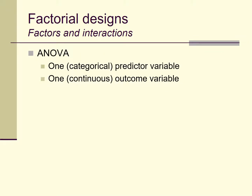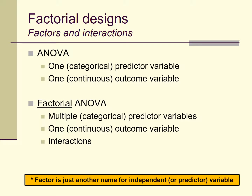What are factorial designs? You've already covered ANOVA — it's a data analysis where we have one categorical predictor variable and one continuous outcome variable. Factorial ANOVAs are just ANOVAs where there are more than one categorical predictor variable, with still only one continuous outcome variable. If we had more than one outcome variable, we would be doing a MANOVA, a multivariate technique. What's interesting about factorial designs is that when you have more than one predictor variable, you can look at interactions between those predictor variables.